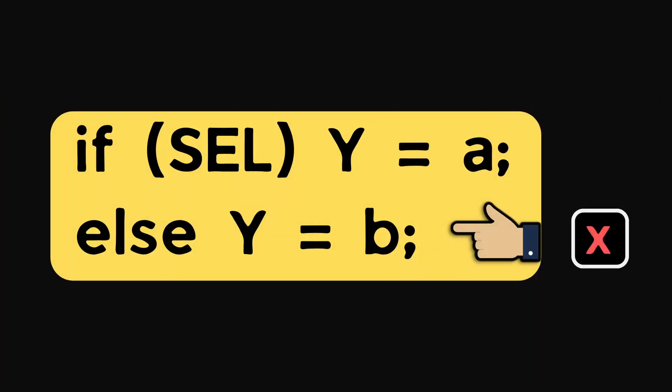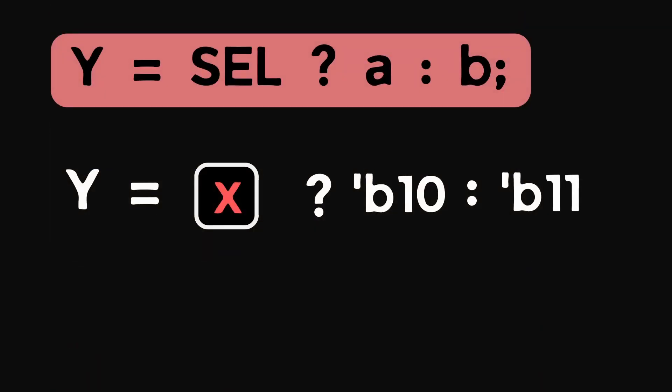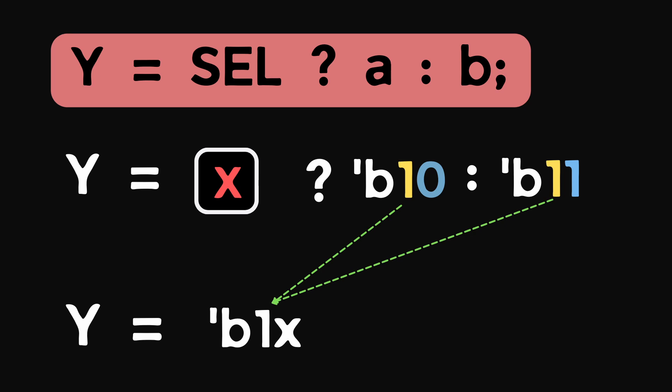If-else will execute else statement. In conditional operator, when select is X, then the result is mixed of optimism and pessimism. It checks both A and B. Bitwise, if both are same, then it's passed to the result. As both MSB bits are 1, so 1 is passed to the result. But LSB bits are completely different. So X is passed instead of 0 or 1.